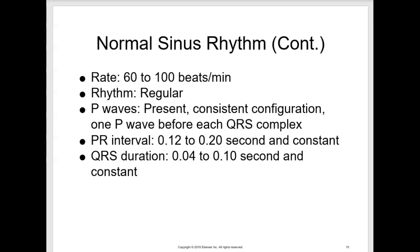The heart rate should be between 60 and 100 beats per minute. Rhythm is regular. P waves are present and consistent in configuration with one P wave before each QRS complex. The PR interval is 0.12 to 0.20 seconds and is constant. The QRS duration is 0.04 to 0.12 seconds and is also consistent.